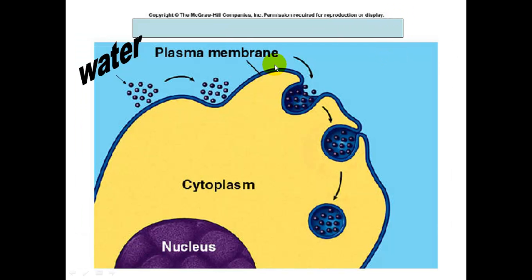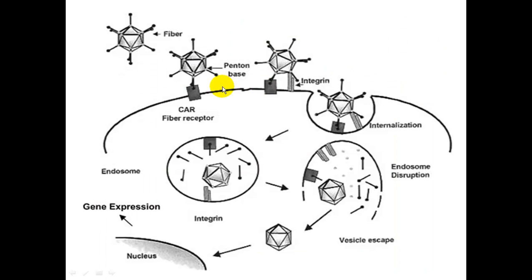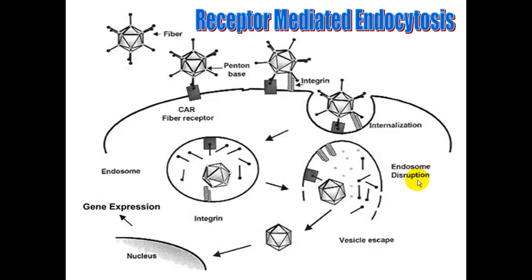In another example, water molecules are being brought into the cell. The membrane surrounds them, and now we have a small vacuole. That is also endocytosis, but because it's liquid, it is pinocytosis. In yet another example, a fiber has to bind to a receptor on the cell membrane. Once it binds, it can be allowed into the membrane and forms around it. That is receptor-mediated endocytosis.